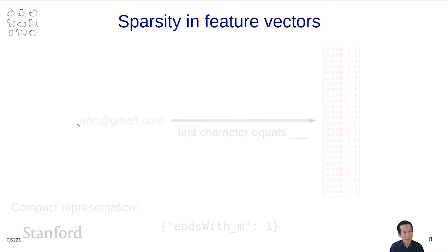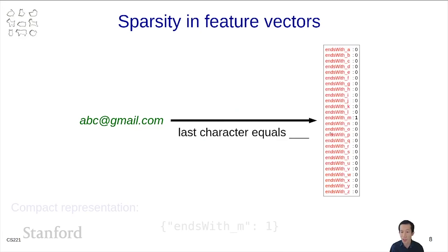One thing you might note is that feature templates are pretty flexible, but sometimes they can give rise to a lot of features. Last character equals blank. And there's already, you know, 26 if you only include lowercase letters. Furthermore, most of these feature values are zero. In these cases, this is what we mean when a feature vector is sparse. You can actually represent sparse feature vectors more compactly by just as a dictionary mapping the feature name to the actual feature value.